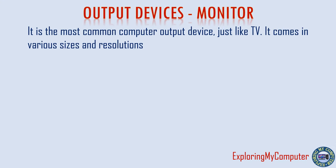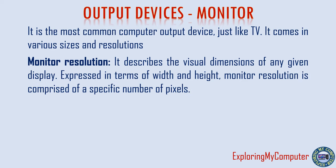Monitor is the most common computer output device, just like a TV. It comes in various sizes and resolutions. Monitor resolution describes the visual dimensions of any given display, expressed in terms of width and height, and is comprised of a specific number of pixels.